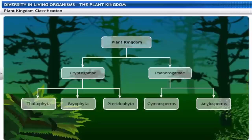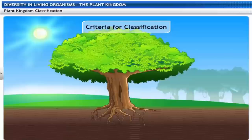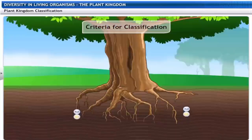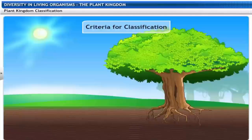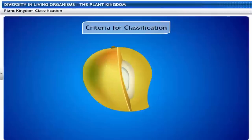These criteria evolve from answers to four main questions. One: does the plant have distinct parts like stem, roots and leaves? Two: do these parts have tissues that transport food and water? Three: does the plant bear naked seeds? Four: are these seeds enclosed in fruits?